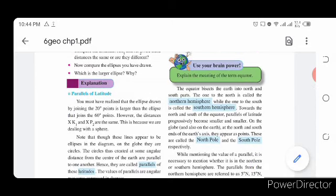That is why the equator is considered as zero degree parallel. It is the largest parallel and also a great circle. The angular distance of other parallels towards north and south goes on increasing away from the equator. Use your brain power. Explain the meaning of the term equator. The equator bisects the earth into north and south parts. The one to the north is called the northern hemisphere, while the one to the south is called the southern hemisphere.